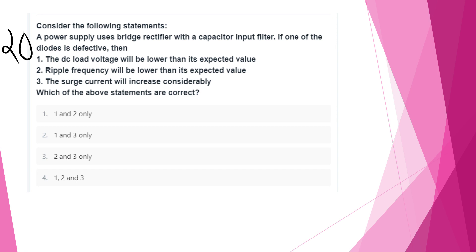Consider the following: a power supply uses a bridge rectifier with a capacitor input filter. If one of the diodes is defective: DC load voltage will be lower than expected; ripple frequency will be lower than expected; surge current will increase considerably. All three statements are correct.